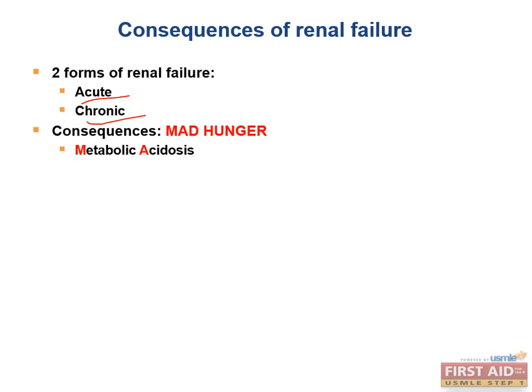First is metabolic acidosis, and that's due to the inability to excrete hydrogen ions. Patients with renal failure also have dyslipidemia. It's not completely understood why triglyceride levels increase in these patients, but they do — increased triglyceride levels is a good thing to remember.